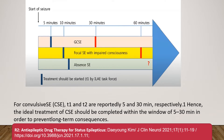For generalized convulsive status epilepticus, up to five minutes you can wait, as some seizures may stop spontaneously. T1 is five minutes — if a generalized convulsive seizure doesn't stop by five minutes, it is unlikely to stop without intervention. Therefore, you start intervening at five minutes and should have control by 30 minutes, otherwise brain damage may occur. The window of five to 30 minutes is the time interval we have for controlling generalized convulsive status epilepticus.